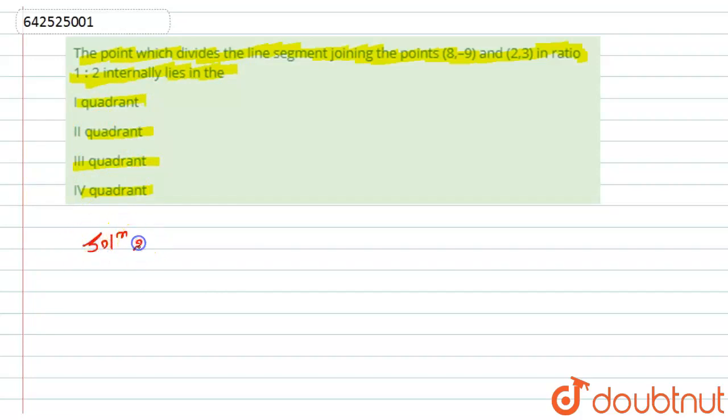Let us start with the solution. First of all, what is given to us? We have given a line segment. Let this be the line segment. Here is the point, that is (8, -9) and (2, 3), and there is a point which is dividing the line segment.